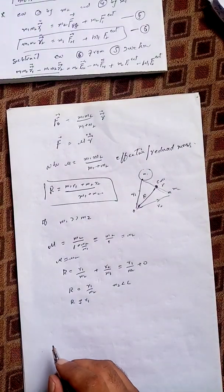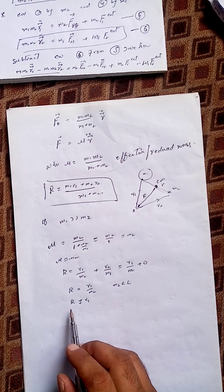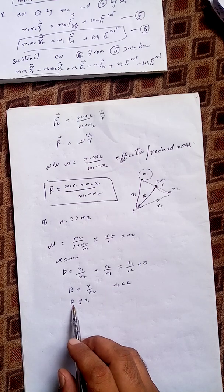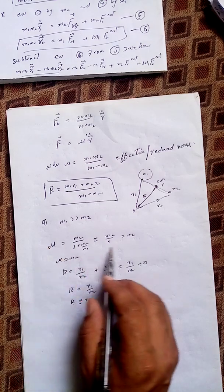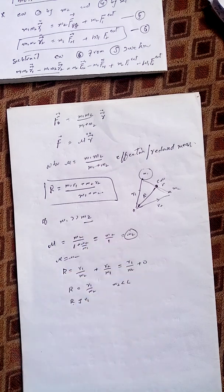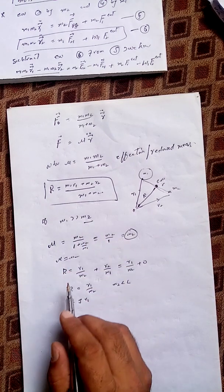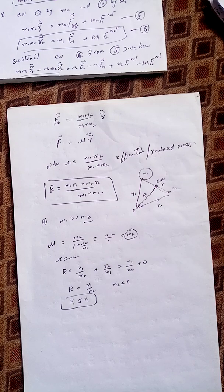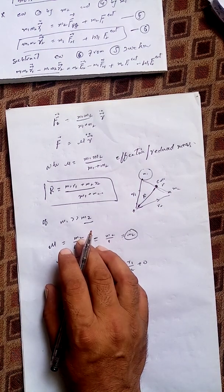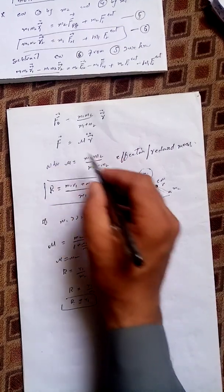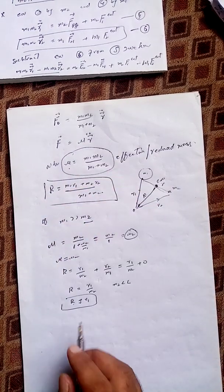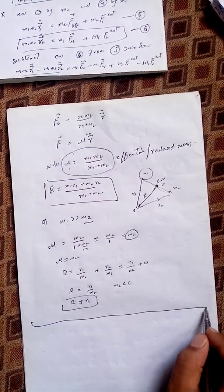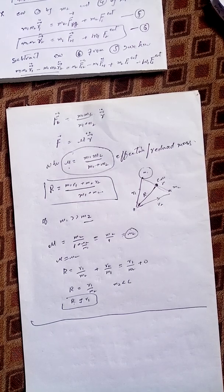This shows that in the equation of motion we can replace the reduced mass with the smaller mass when one mass is much larger. The center of mass shifts toward the bigger mass. So when dealing with two or more bodies, we replace all the masses by the reduced mass of the system. This is all about the equivalent one-body problem.